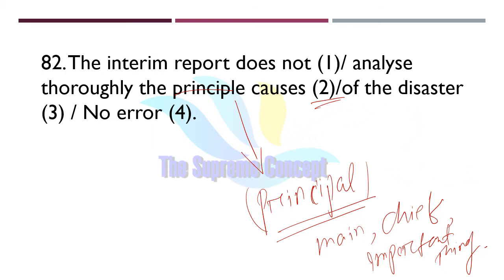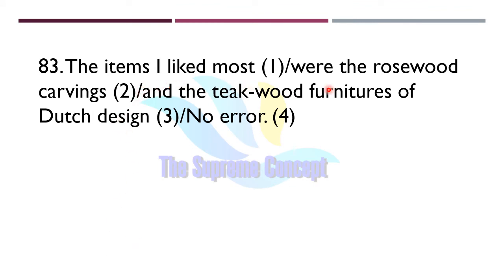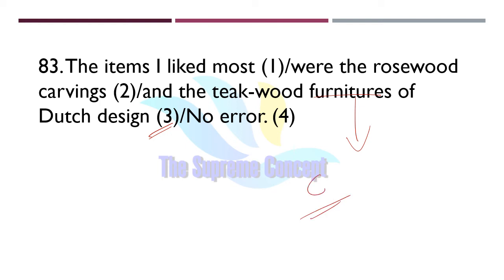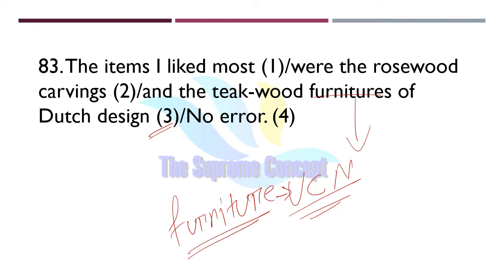Question number 83: 'The items I liked most were the rosewood carvings and the teakwood furnitures of Dutch design.' The error lies in part number three — we cannot use the plural form 'furnitures'. 'Furniture' is an uncountable noun, so it has no plural form. It will always be used as 'furniture'.